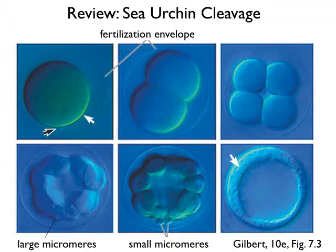At the next division those micromeres divide again to get very small micromeres at the extreme vegetal pole, and you can see that there's a fluid-filled cavity — the blastocele — that's formed. Eventually, by the time many more cleavages have occurred, we get a hollow ball, the blastula, which you can see on the lower right.